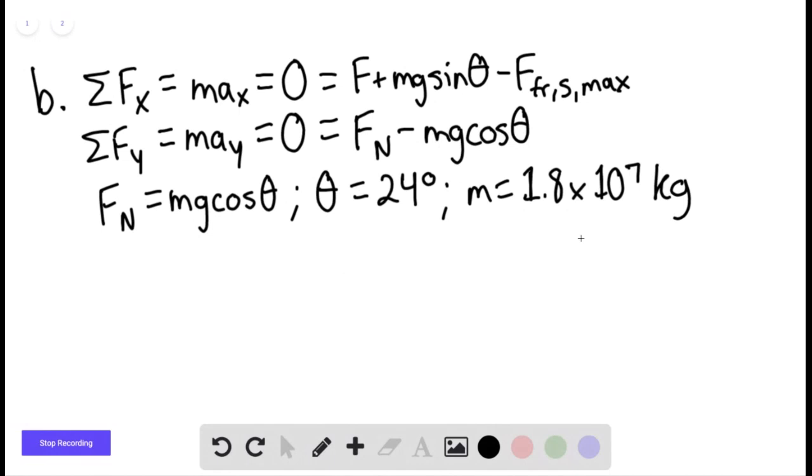We can find the force needed in order to keep this block stationary. So the force would be equal to mg times the coefficient of static friction times cosine of theta minus sine of theta.